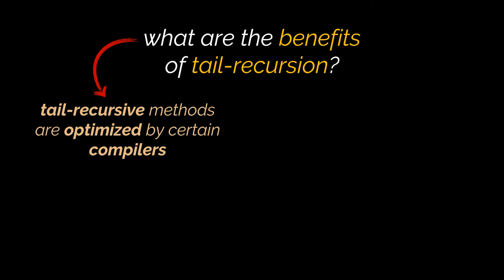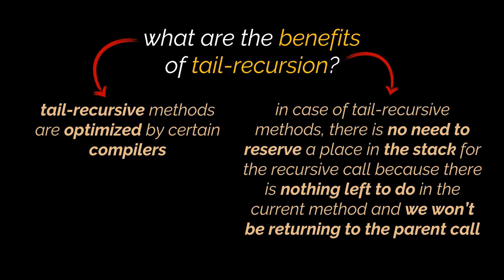These compilers usually execute recursive calls with the help of a stack. This stack stores all the relevant information of each recursive call. In case of a tail recursive method, and since a recursive call is the last statement executed, there is no need to reserve a place in that stack for that particular call or any call following it.